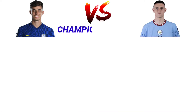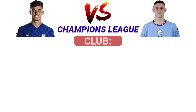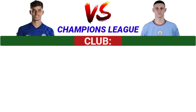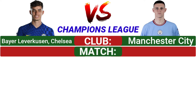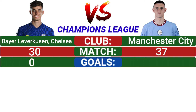Now let's compare their Champions League statistics. In the Champions League, Havertz played for Bayern Leverkusen and Chelsea, and Phil Foden played for Manchester City. Havertz made 30 appearances and Phil Foden made 37 appearances. Havertz scored 4 goals and Phil Foden scored 10 goals.